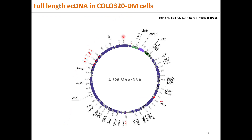Here is the full map of ECC DNA in COLO 320 double-minute-positive cells, which is a colon cancer cell line. It contains many oncogenes such as MYC and PVT1 from several different chromosomes. Some of these oncogenes are non-coding RNAs such as PVT1 and PCAT1.